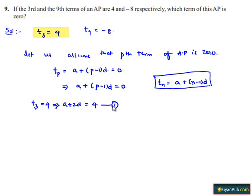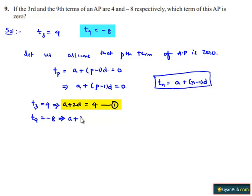Again, t9 is given as minus 8, which implies a plus (9 minus 1) into d, that is a plus 8d is equal to minus 8. Let this be equation number 2.